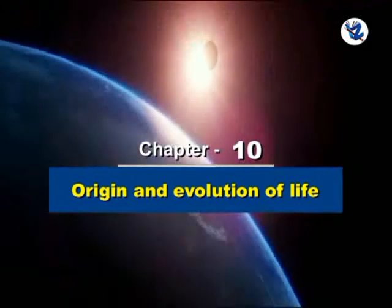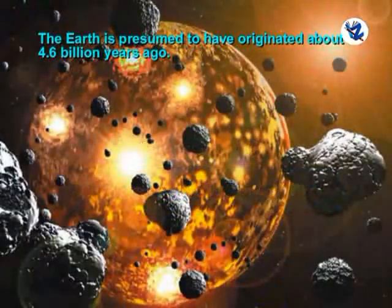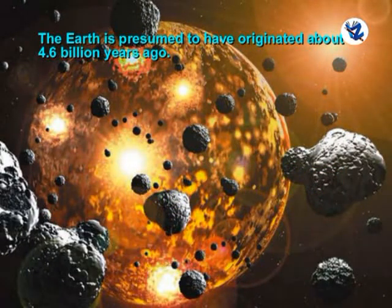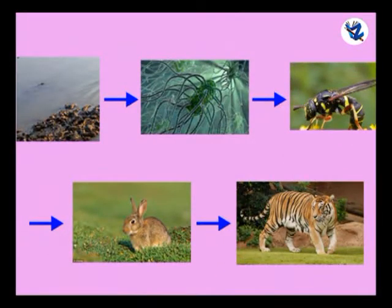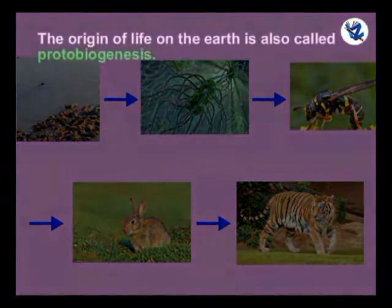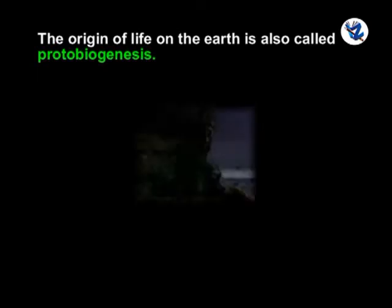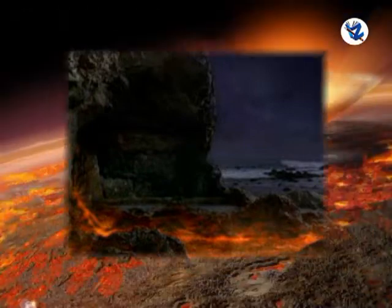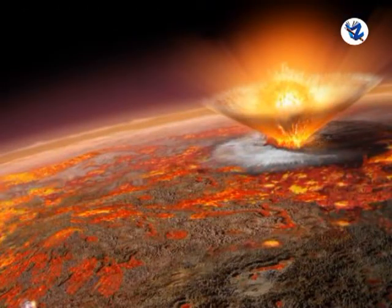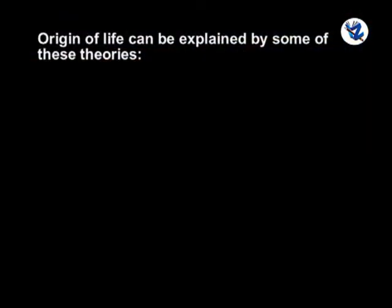The Earth is presumed to have originated about 4.6 billion years ago. Life came into existence gradually. The origin of life on the Earth is also called protobiogenesis. It is clear that life came into existence from the non-living substances of the primordial Earth about 3 billion years ago. The origin of life can be explained by some of these theories.